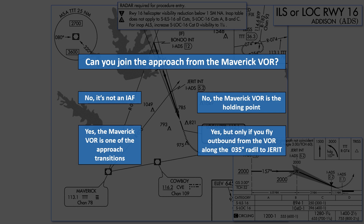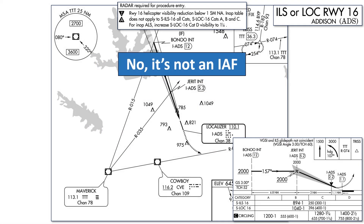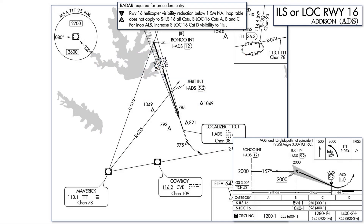The first question should give you a hint that the answer is no — it's not an initial approach fix. Theoretically, you could be given a vector that overflies the VOR, but that's unlikely as it's located right on the field at Dallas-Fort Worth International, and the route to intercept the inbound course from there points you in the wrong direction for the approach with no procedure turn.